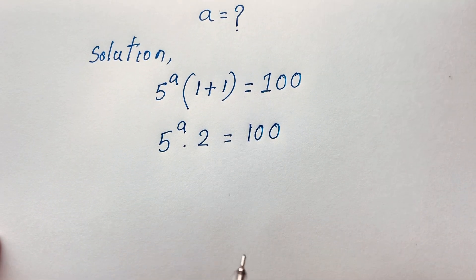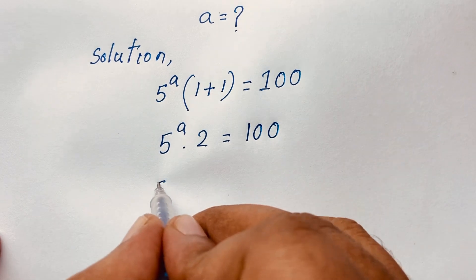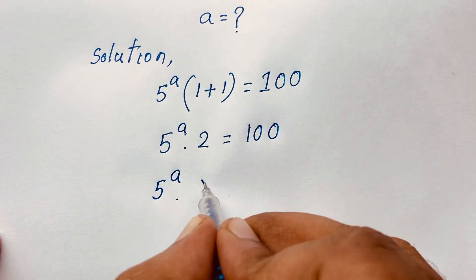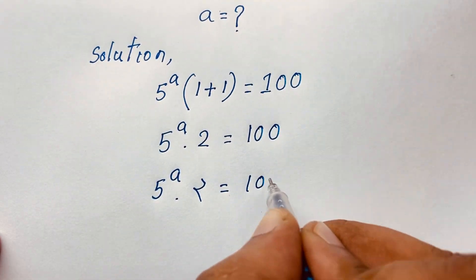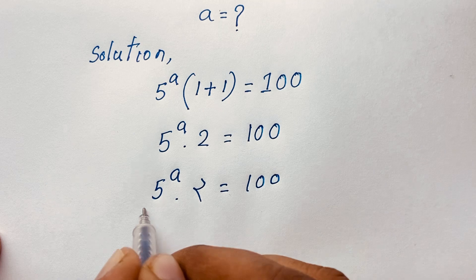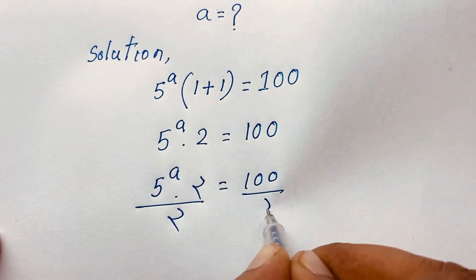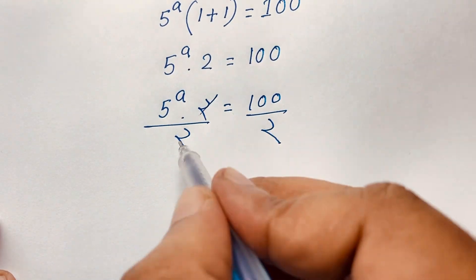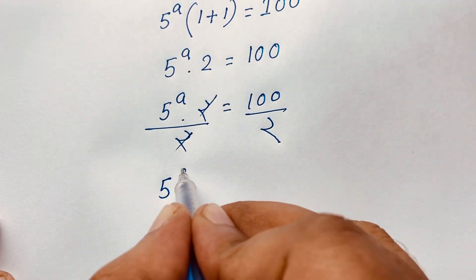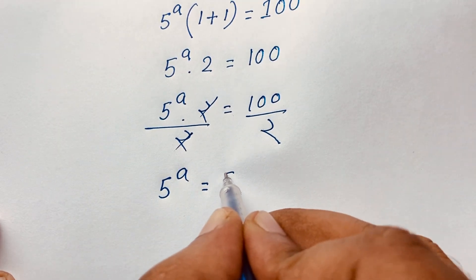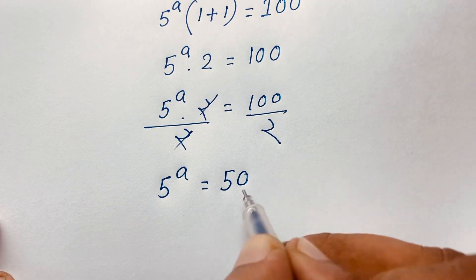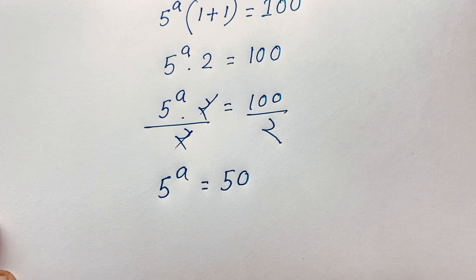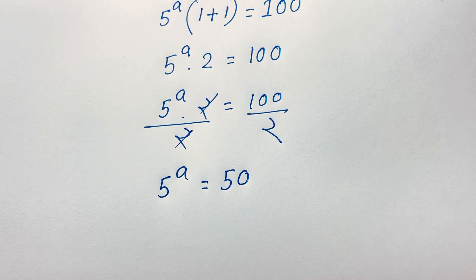Now I divide both sides by 2. So it will be 5 to the power a times 2 is equal to 100, divide by 2. Now you can see here is 2 cancels out. We are finding out here is 5 to the power a is equal to 50. 100 divided by 2, it will be 50. So we are finding out a nice exponential expression: 5 to the power a is equal to 50.